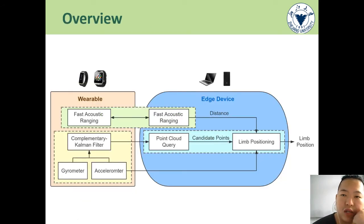Let's see the overview diagram. A two-step filter computes the wrist orientation using the IMU readings. A fast acoustic ranging module keeps computing the distance between two devices. And then the final limb posture is estimated based on the above sensing results.